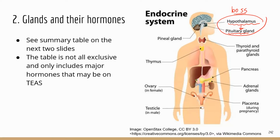There is another small gland also located in the brain — the pineal gland. It secretes melatonin, which regulates the sleep cycle. That's why there are supplements on the market that are supposed to help you sleep better, and those supplements usually contain melatonin.